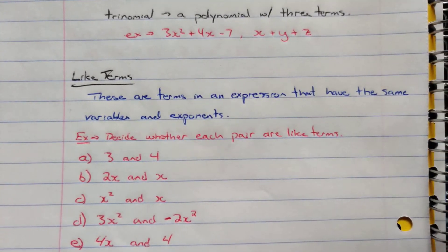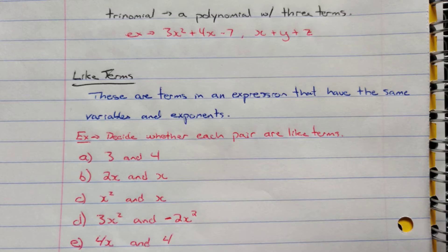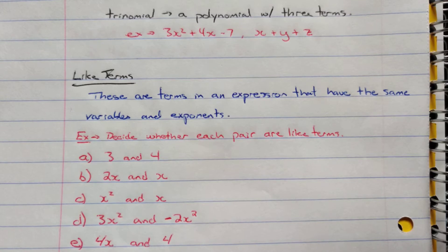Now, there's the concept of like terms — terms that are similar to each other. They need to have the same variable and exponent. The number portion doesn't matter; it's the variable and the exponent on that variable that matter.